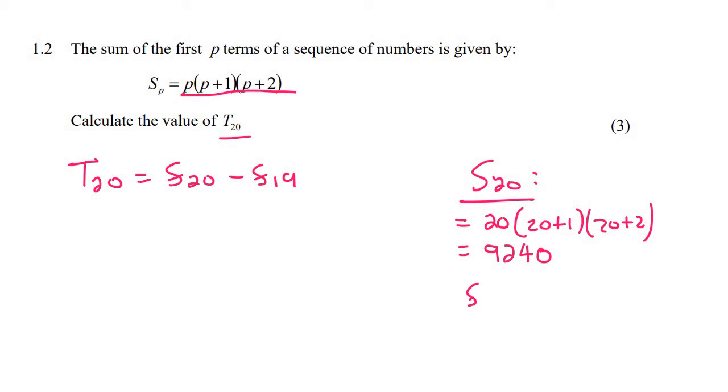Then if we find the sum of the first 19, then you just plug in 19: 19 plus 1, 19 plus 2, and that'll give you 7,980. So we can now say that this is 9,240 minus 7,980 and that's going to give a value of 1,260. And so that's the answer, 1,260.